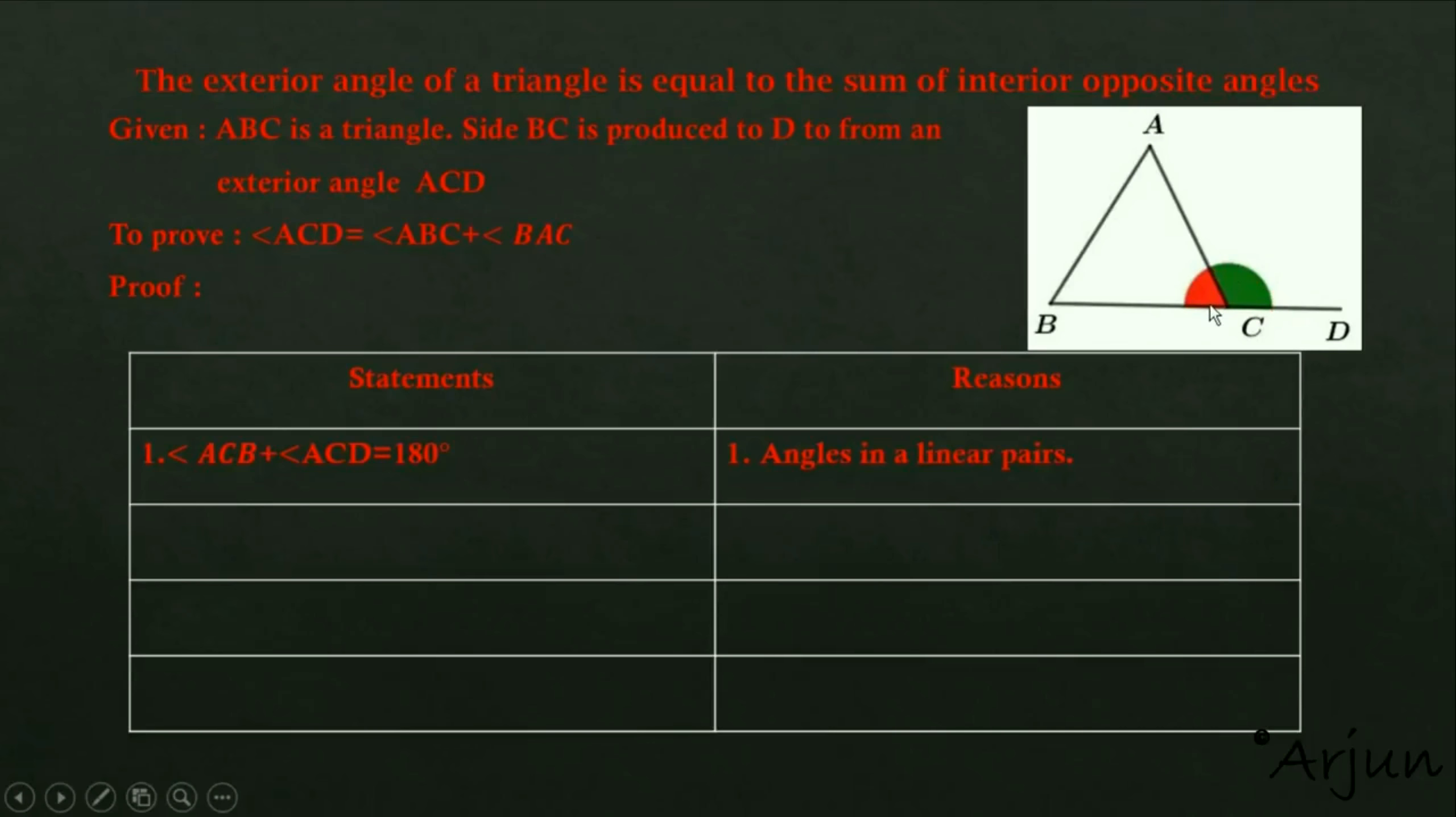So a straight angle equals 180 degrees. Statement two: angle ABC plus angle ACB plus angle BAC equals 180 degrees. We previously discussed that the triangle interior angles sum to 180 degrees.